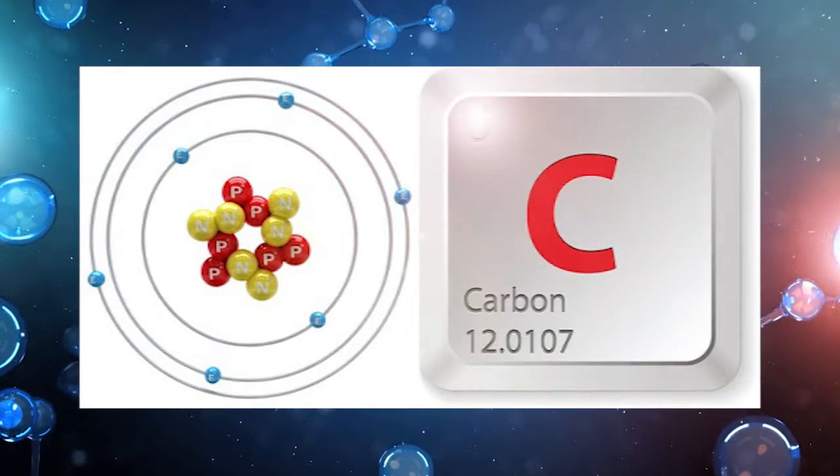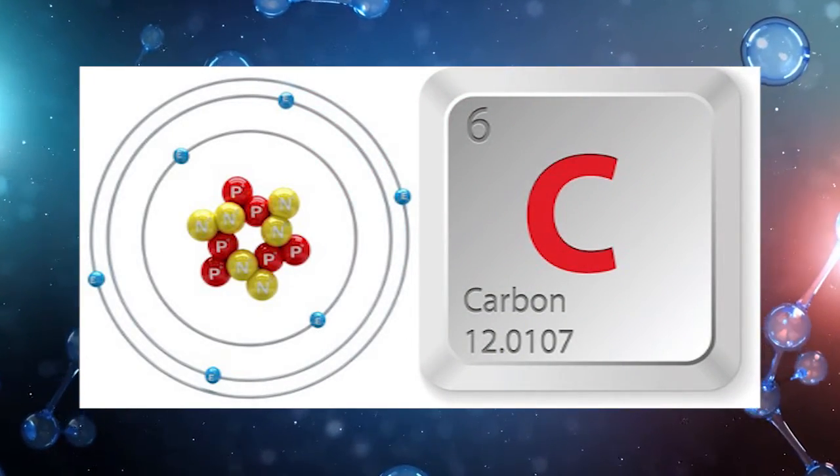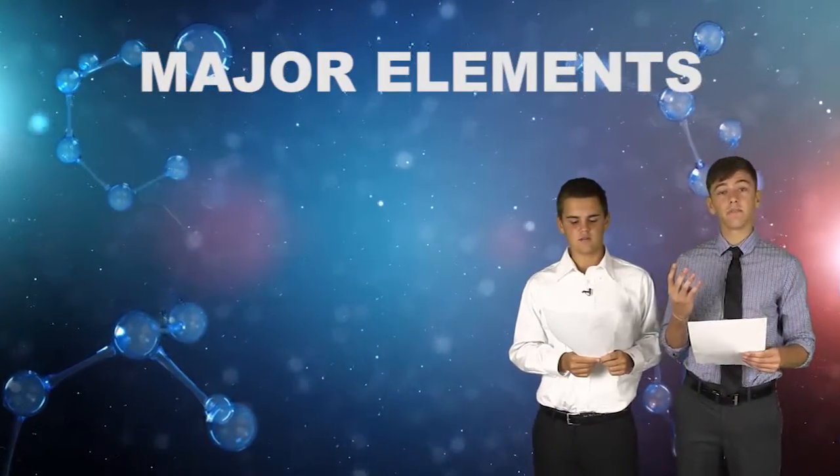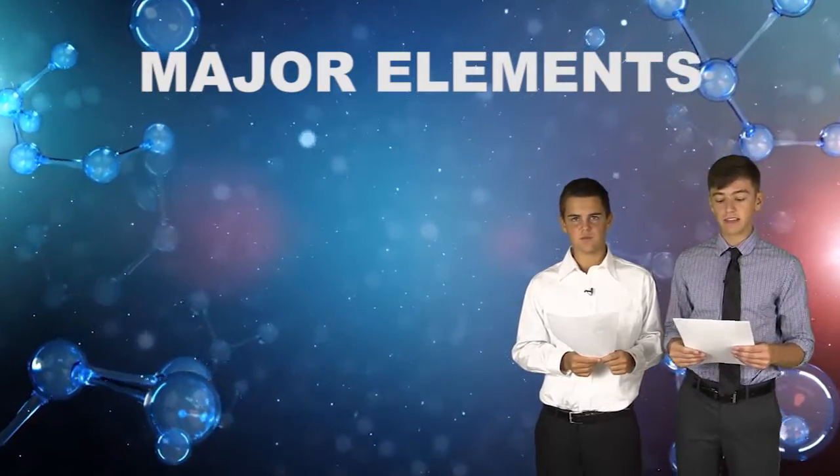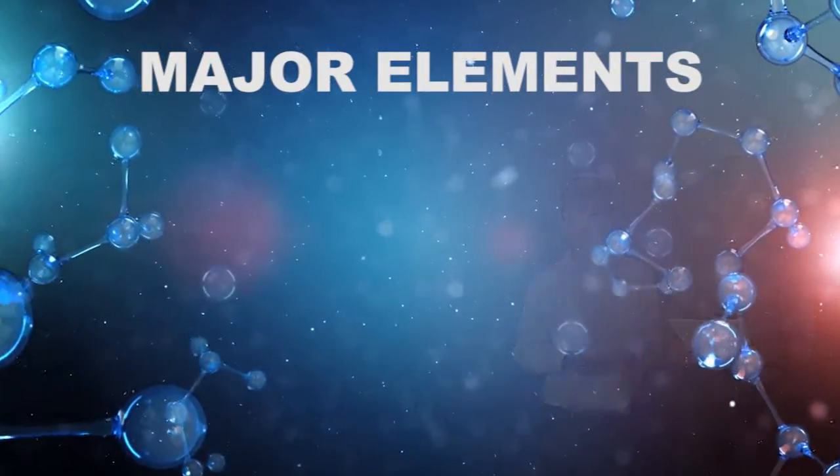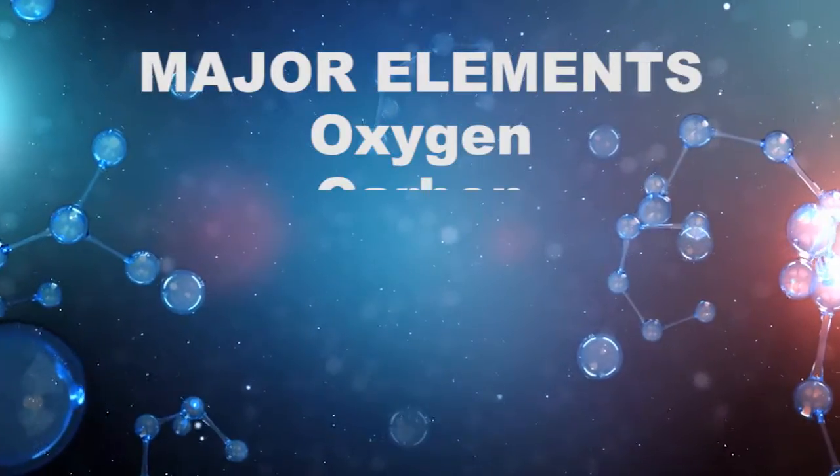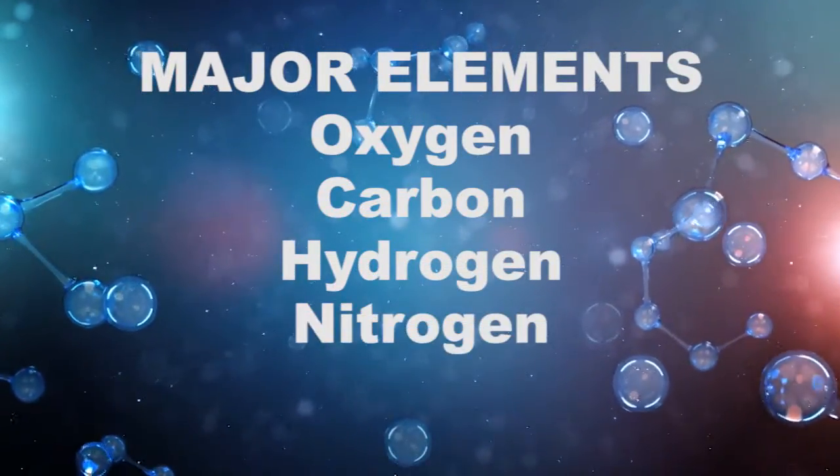And the element's atomic number is determined by the number of protons. There are four elements that make up 96% of the body's mass. These are called the major elements. They are oxygen, carbon, hydrogen, and nitrogen.